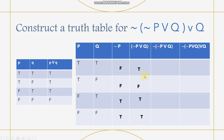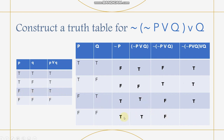So the final answers for the truth table of ¬(¬P∨Q)∨Q are: true, false, true, and true. F and T gives true, T and F gives true, F and T gives true, and F and T gives true.